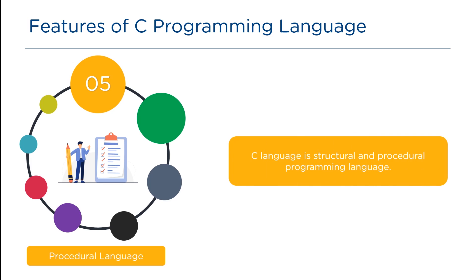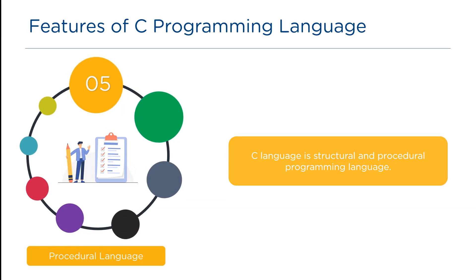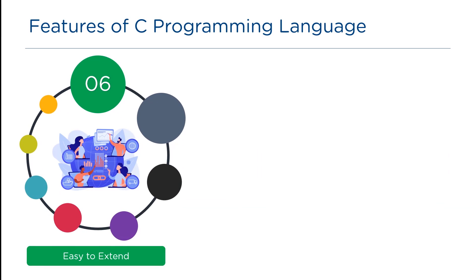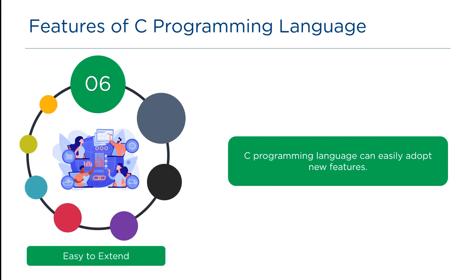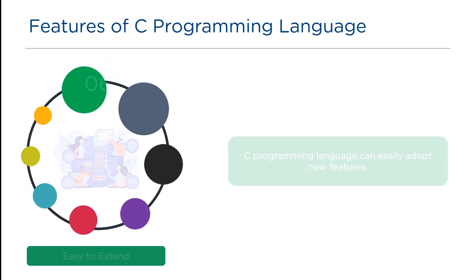C follows the top-down approach to software development. Instead of classes and objects, a C program is divided into accessible smaller units called functions. The extendable nature of C allows developers to add additional functions to the C library, and it also quickly adapts to all new features.